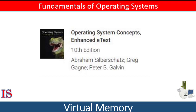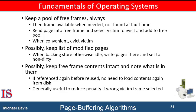We're going to begin a discussion of page allocation, but let's pick up where we left off. Other procedures are often used in addition to specific page replacement algorithms. For example, systems commonly keep a pool of free frames. When a page fault occurs, a victim frame is chosen as before. However, the desired page is read into a free frame from the pool before the victim is written out. This procedure allows the process to restart as soon as possible without waiting for the victim page to be written out. When the victim is later written out, its frame is added to that free frame pool.